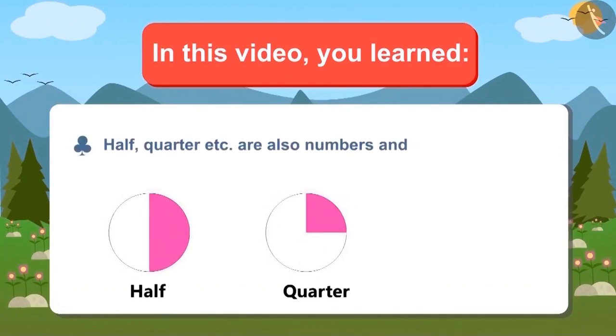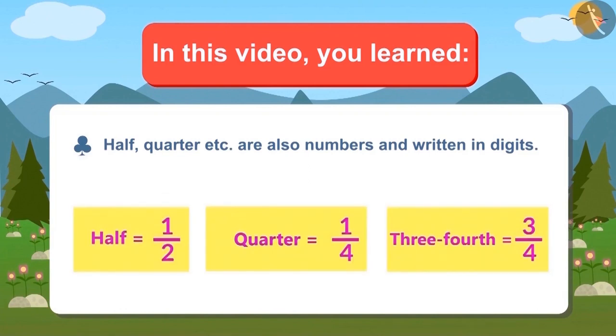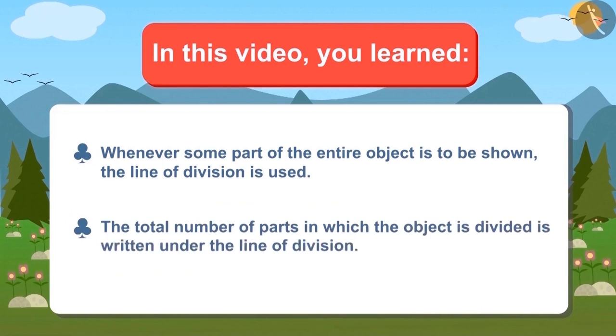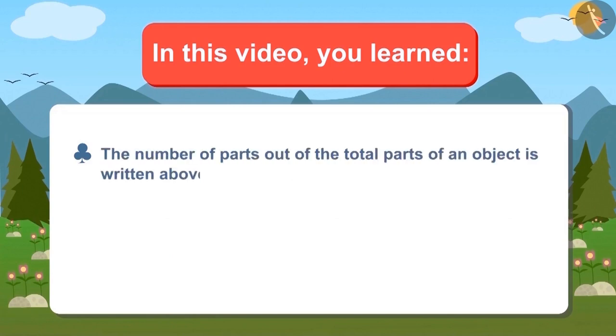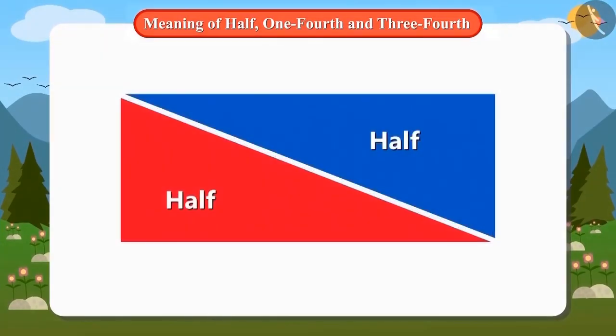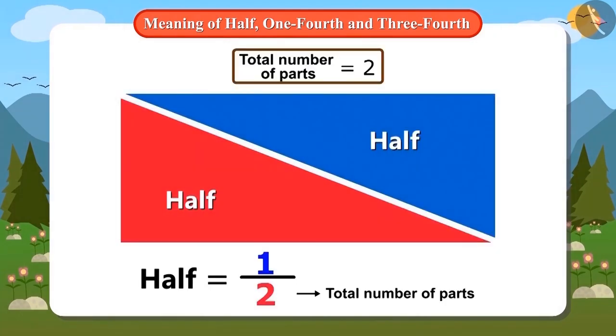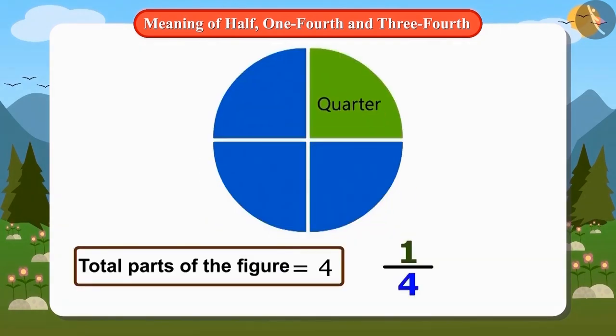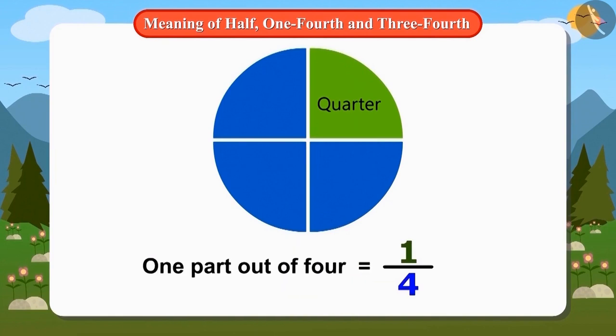In this video, we have learned that half, quarter, etc. are also numbers and they can be written in digits. And whenever some part of the entire object is to be shown, then the line of division is used. The total number of parts in which the object is divided is written under the line. And the number of parts out of the total is written above the line. For example, to show half of an object one by two is written which means one part out of two and one by four is written for one-fourth which means one part of four.